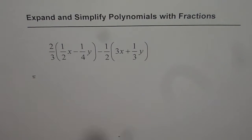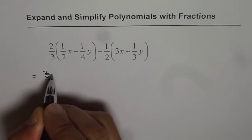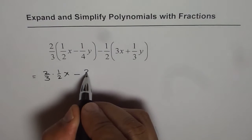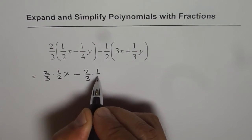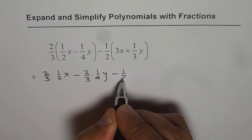So let's expand applying distributive property. That means we will multiply 2 over 3 with half x first, and then take away 2 over 3 times one-fourth of y.